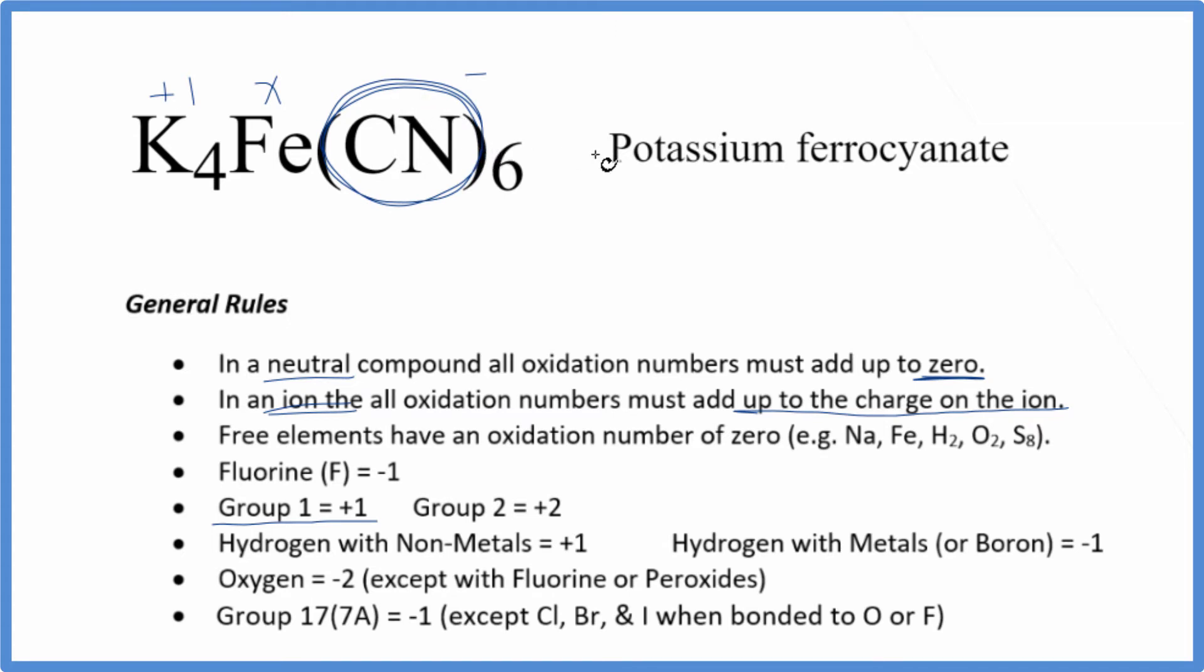Because of that, we can set an equation up. We can say four times one, that's four, plus the iron we don't know, that's Fe there, put that X. Six times one minus, that gives us a minus six. All that equals zero.